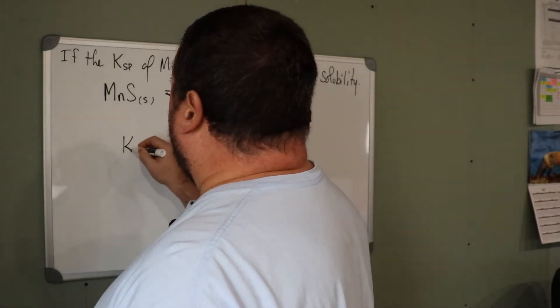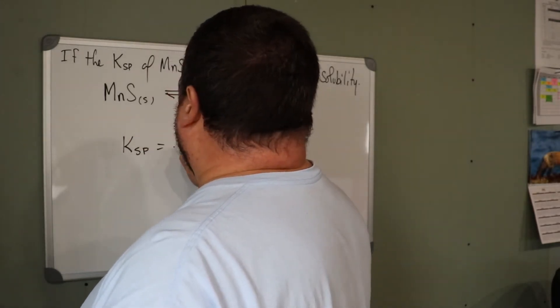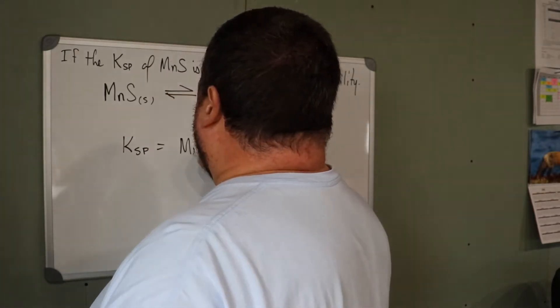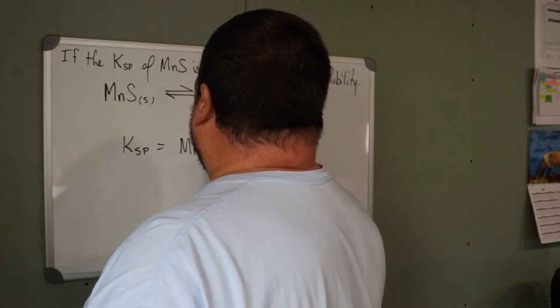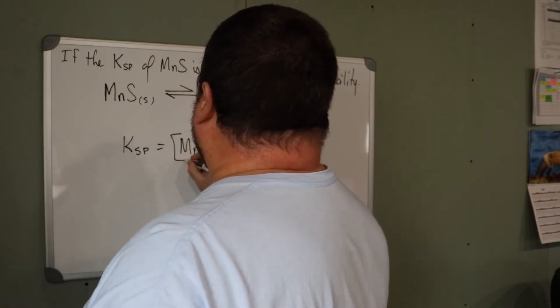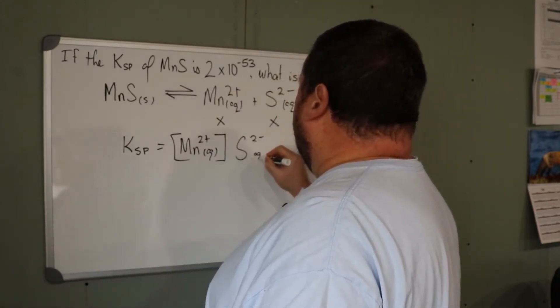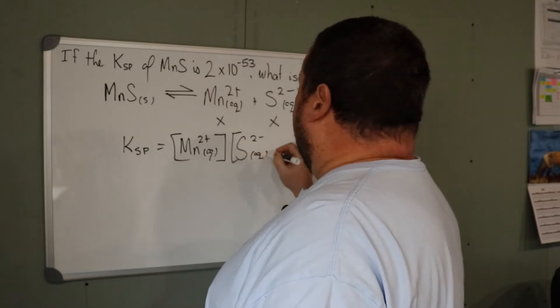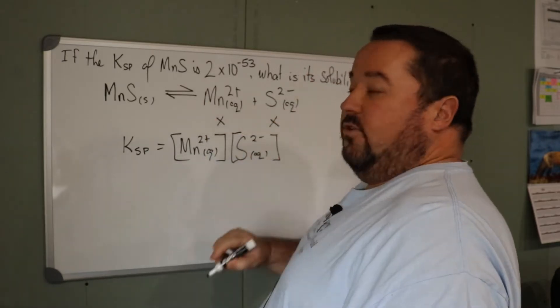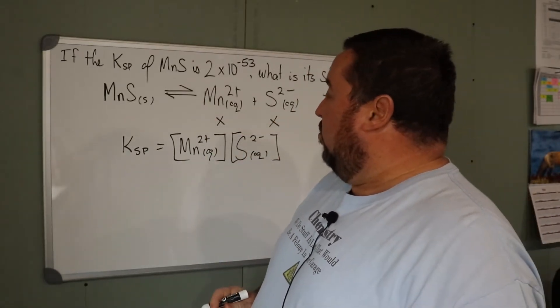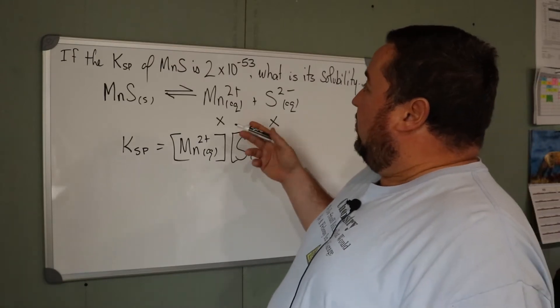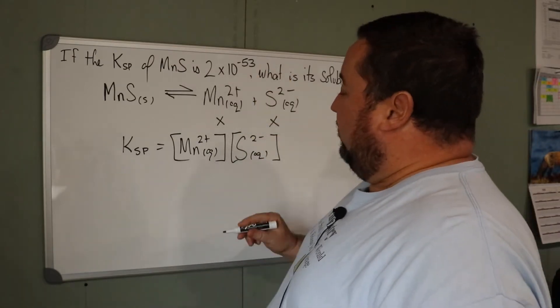Ksp is equal to the Mn2+ concentration times the S2- ion concentration. Each is raised to the first power because the coefficients are one. Then we substitute in the numerical value for Ksp.